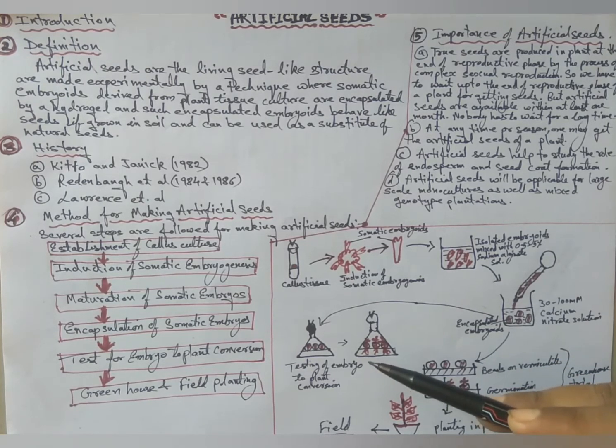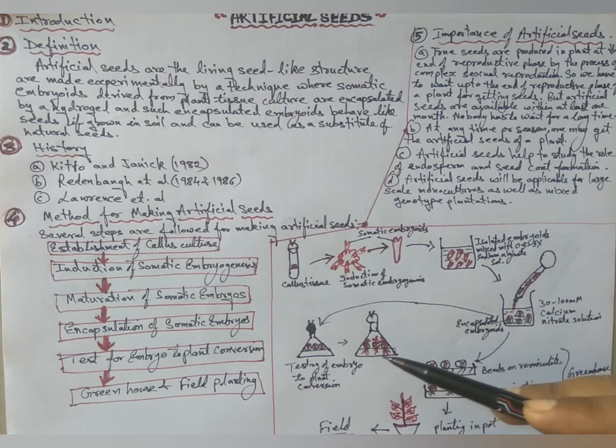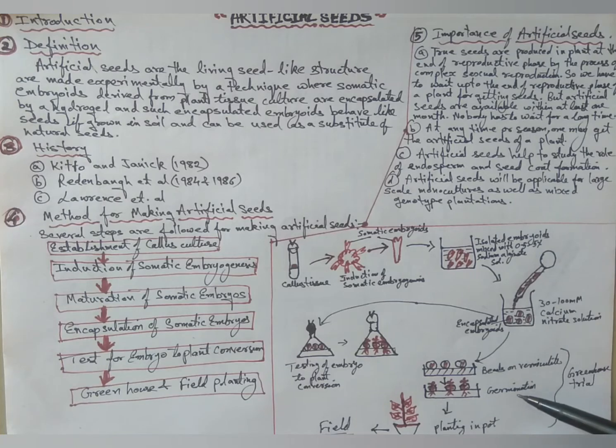First, test for embryo to plant conversion and germination. Second, beads on vermiculite germination, then planting in pots and transfer to field plantations. This is all done in greenhouse trials.